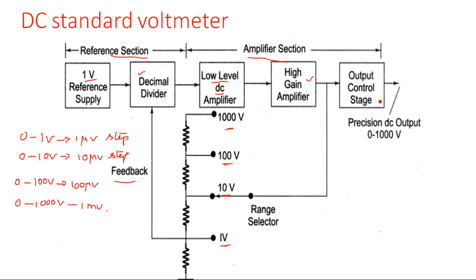The high gain amplifier output is given to the output control stage, giving a precision DC output from 0 to 1000 volts. The feedback system covers 0 to 1 volt, 10 volts, 100 volts, and 1000 volts, so DC measurement can be done from 0 to 1000 volts. This is the first mode where the DC voltage standard voltmeter operates.